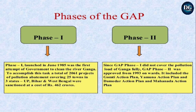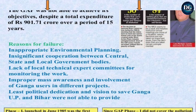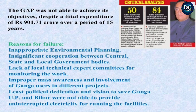Since the Ganga Action Plan's first phase did not fully cover the pollution load of the Ganga, the second phase was approved from 1993 onwards. It included the Gomti Action Plan, Yamuna, the Damodar, and Mahananda Action Plan. The Ganga Action Plan was not able to achieve its objectives despite a total expenditure of 901.71 crore over a period of 15 years.